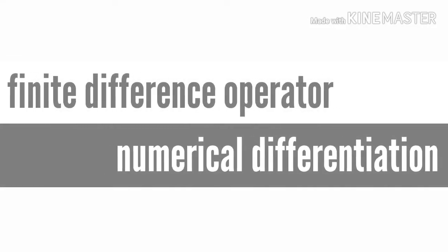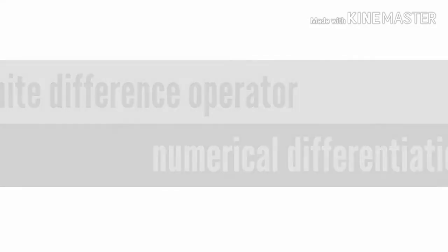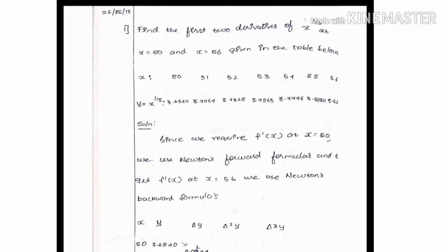Welcome friends. I need numerical differentiation for the problem: find the first two derivatives of x to the power 1/3 at x equal to 50 and x equal to 56, given in the table below.